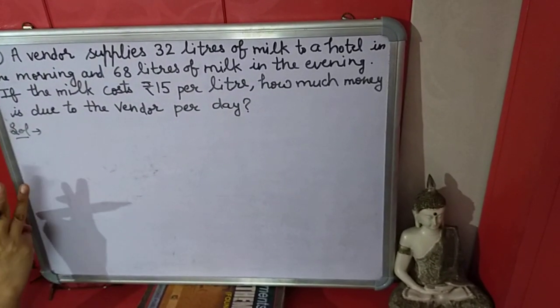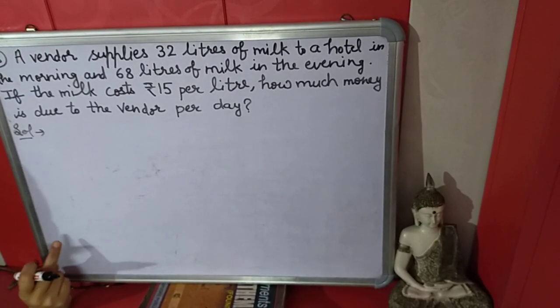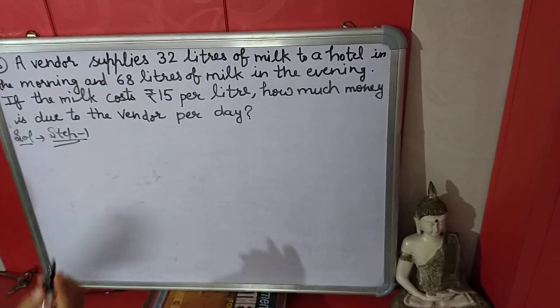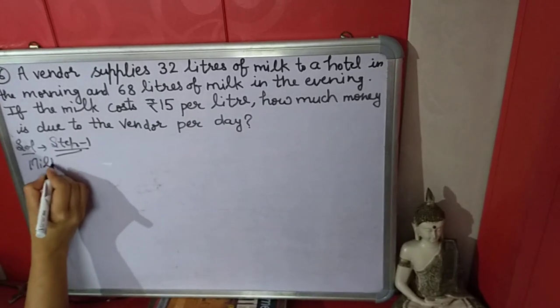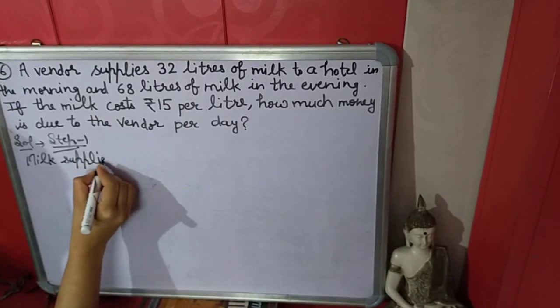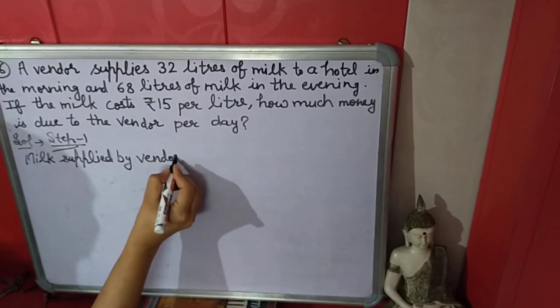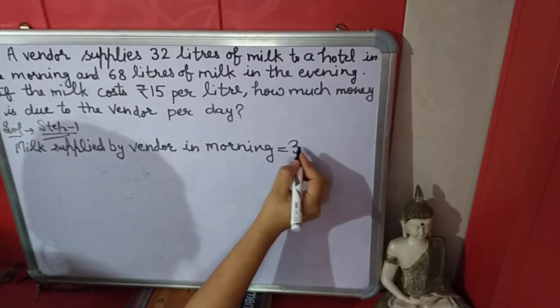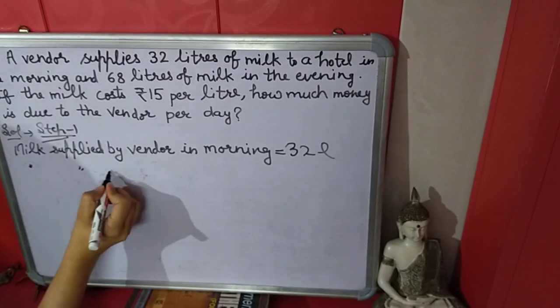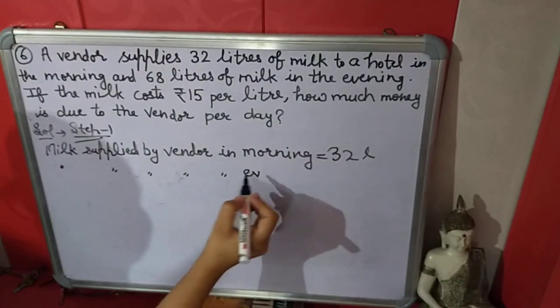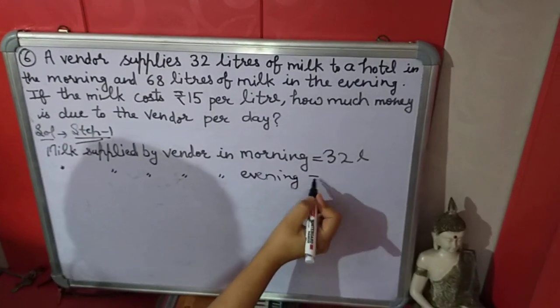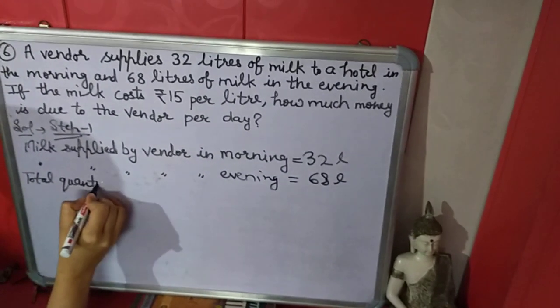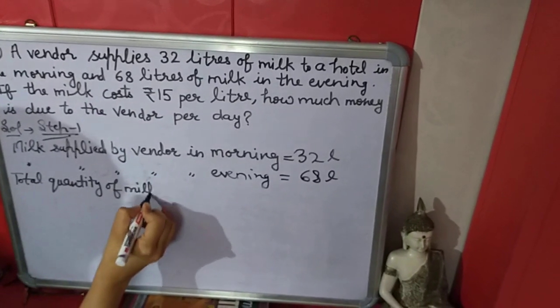In this question also we will do in two steps. In step one we will find the total quantity of milk he supplied, and in step two we will find the cost of total milk. Milk supplied by vendor in morning is 32 liters. Milk supplied by vendor in evening is 68 liters. Total quantity of milk supplied in per day is 32 plus 68 equals 100 liters.